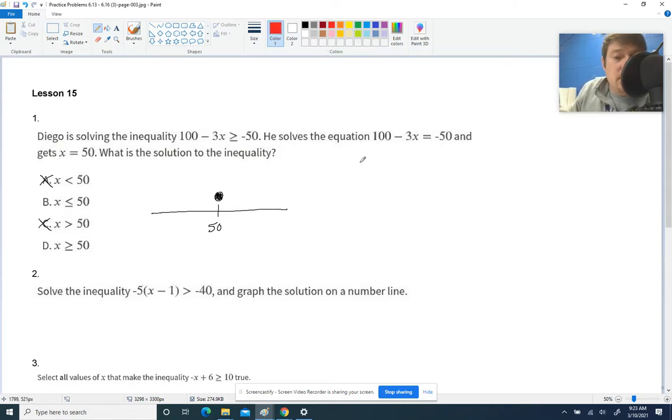The best way to see if this is right is to do the zero test. Let's see if zero makes it work, and if it does, we shade toward it. If not, we go the other direction. Plugging in zero: 100 minus 3 times 0, which is nothing, so 100. Is 100 greater than -50? That is, of course, true. So if our solution is 50, zero would be over here to the left. We shade toward zero since zero makes this true. That means we want all numbers less than or equal to 50, which is B.